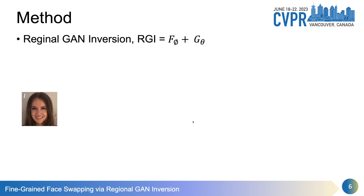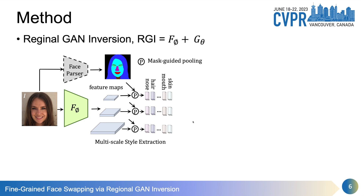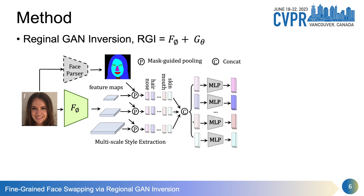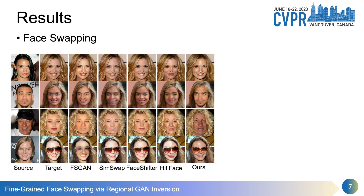The key is how to disentangle shape and texture for facial components. We propose a novel regional GAN inversion network. Given an input image, a pre-trained face parser estimates the segmentation mask. The input image is also processed by an encoder to produce multi-scale feature maps. With the help of the mask, we reduce the spatial information of the feature maps via a mask-guided pooling operation, resulting in a texture vector for each facial region. Each texture vector is bound with a multi-layer perceptron to map to the style space of a pre-trained GAN model — specifically, the pre-trained StyleGAN. We then design a mask-guided injection operation to inject the regional style codes into the generator. During training, we only use single image reconstruction as the proxy task.